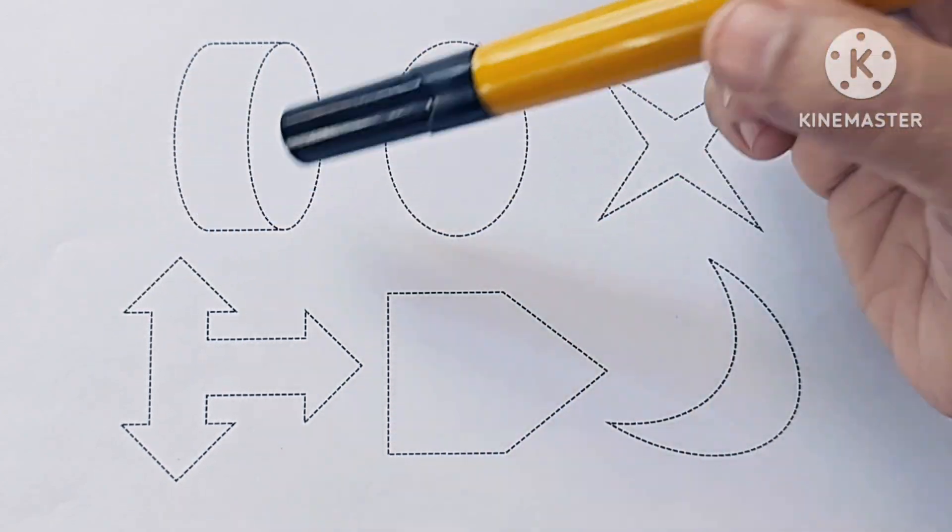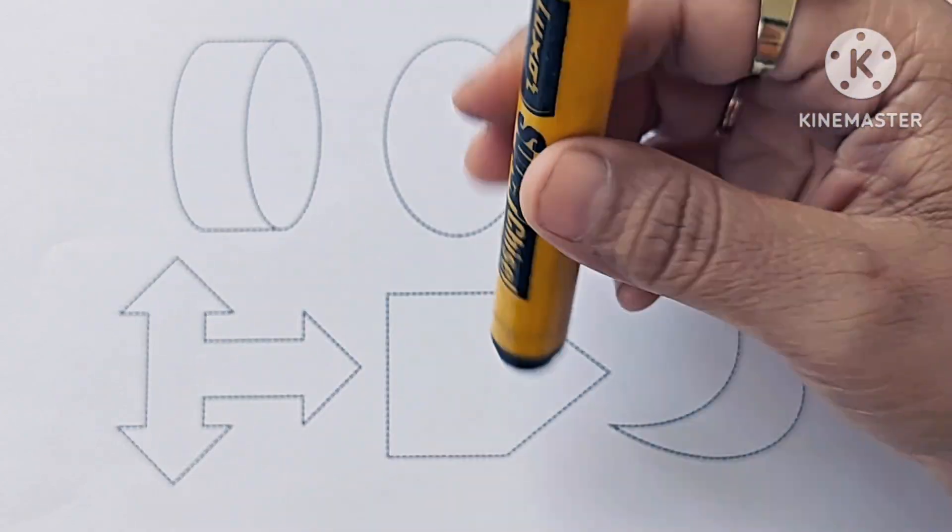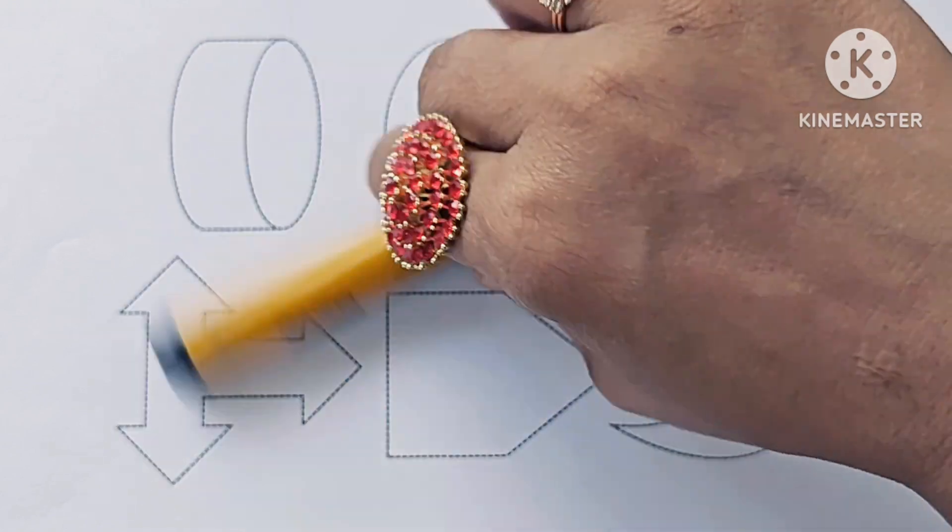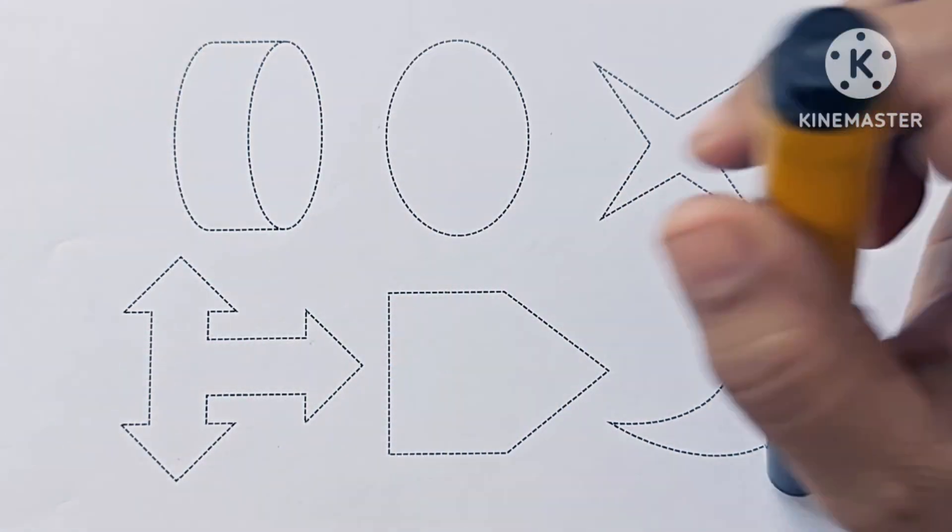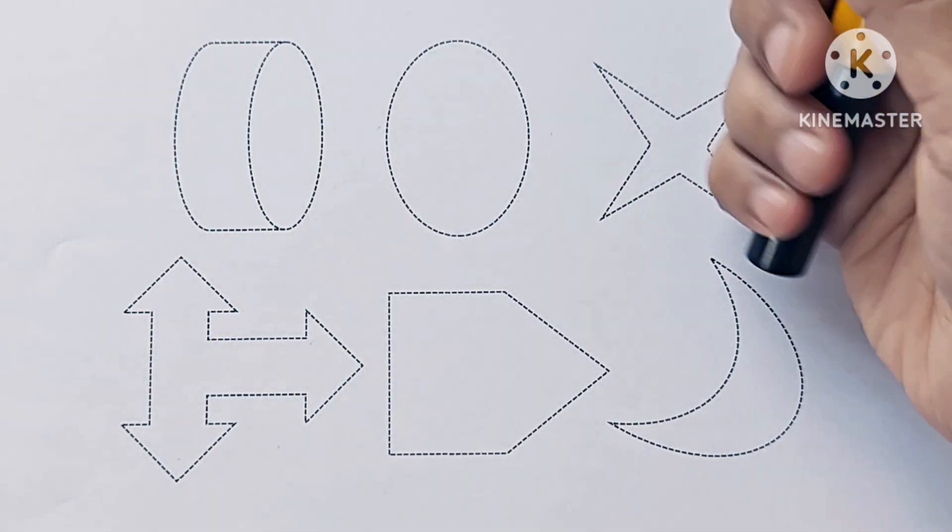It is black color. Kids, which color is it? Black color. It is black color. Now let us draw these shapes.